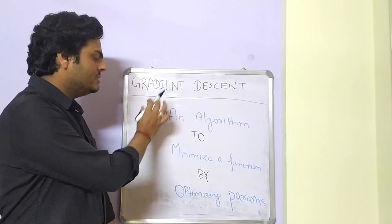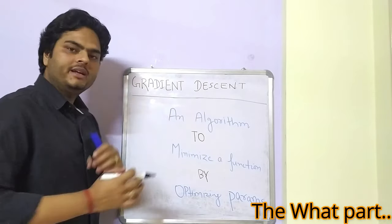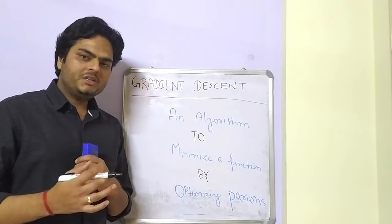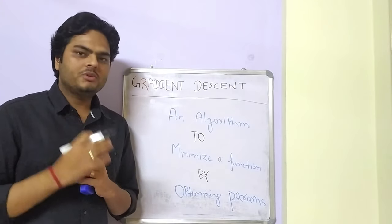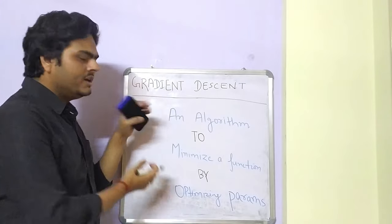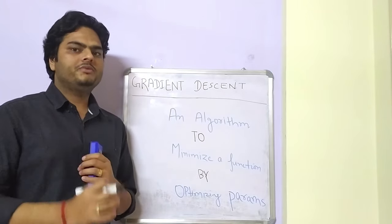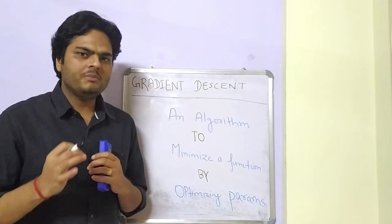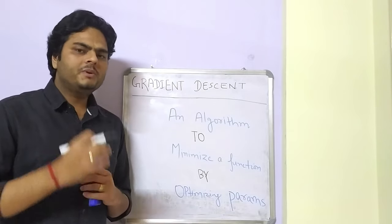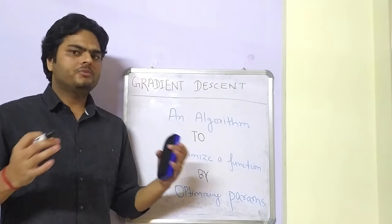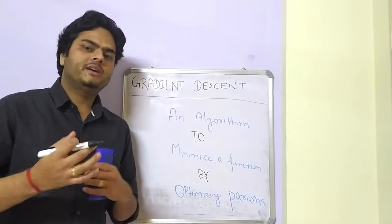Gradient descent is an algorithm to minimize a function by optimizing its parameters. I had a very tough time when I started learning gradient descent for the first time, and I am sure some of you might be having a difficult time understanding it and the mathematics behind it. If you watch this video till the end, you are going to save a lot of time and effort — this concept is very important for deep learning and neural network models. Welcome to Unfold Data Science. My name is Aman and I am a data scientist. Let us start the discussion with understanding what gradient descent is.